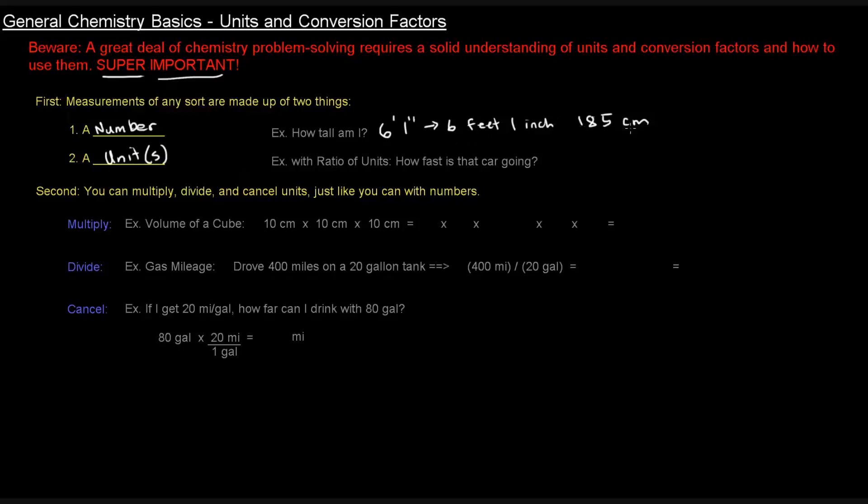You can also have ratios of units. It doesn't have to be just one unit. It could be a ratio of units like how fast is that car going? That car is going 60 kilometers per hour or 100 miles per hour. That's a ratio of units - 60 kilometers to every one hour.